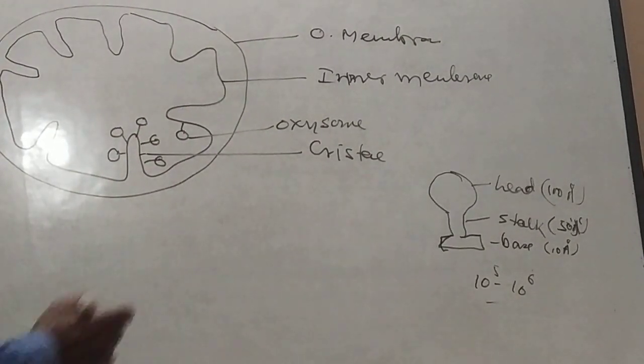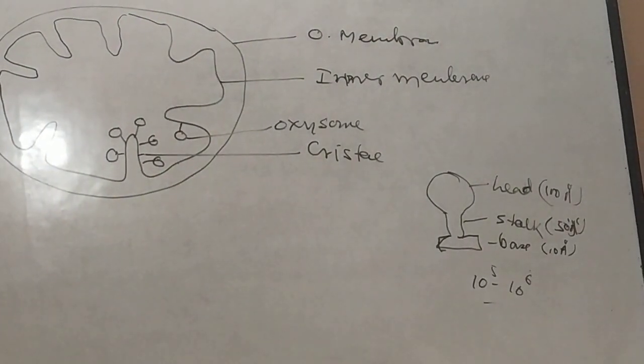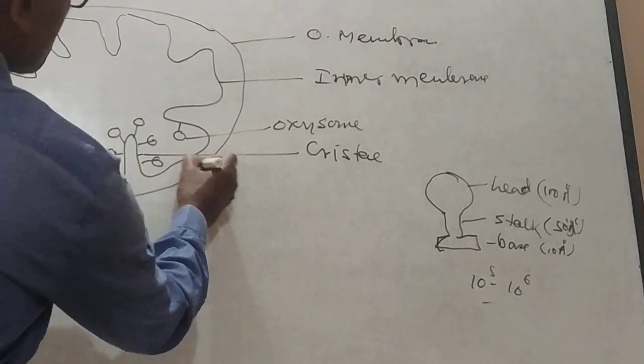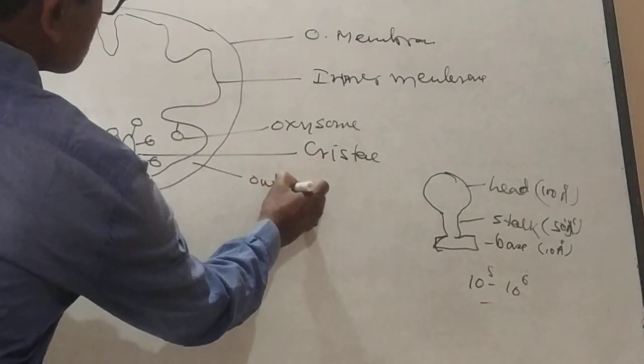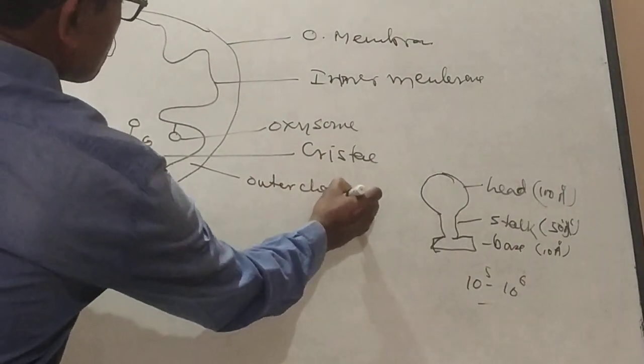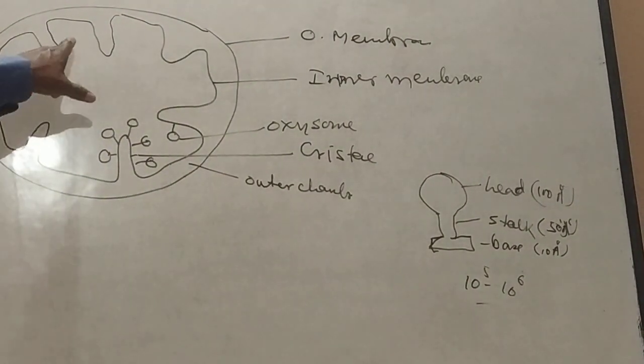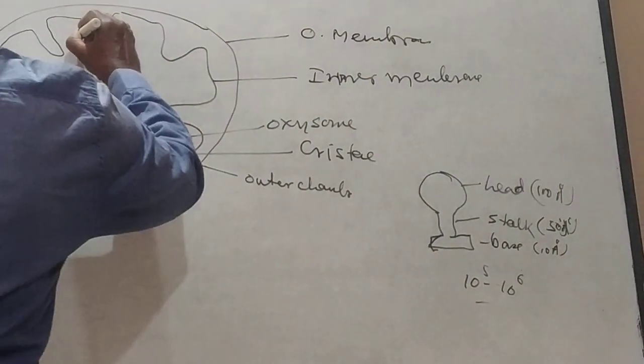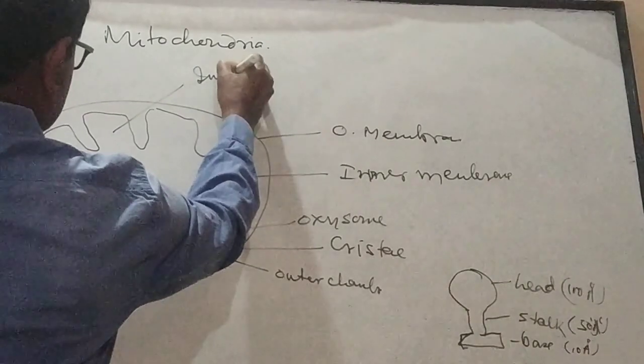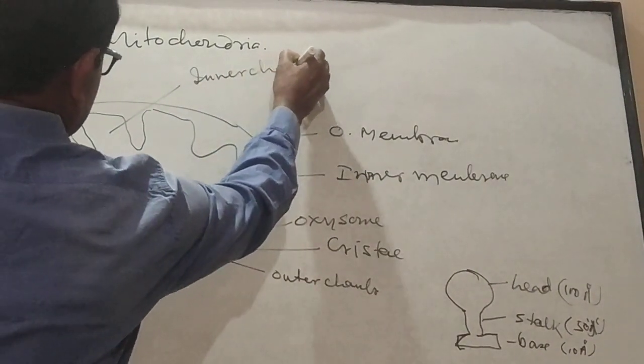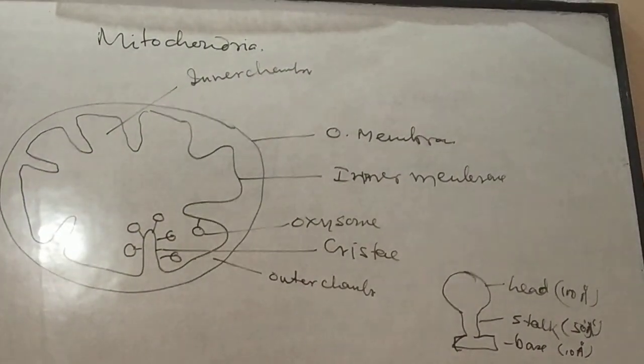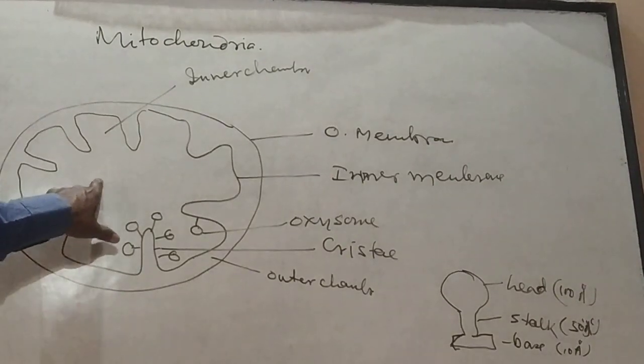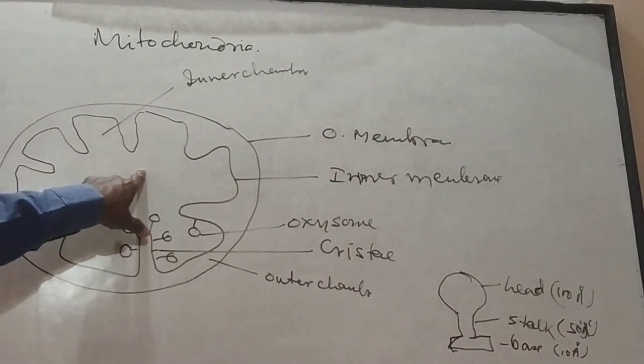Now the gap between outer and inner membrane is known as outer chamber. And the space in between the two cristae is known as inner chamber. Inside it, this portion is known as matrix.